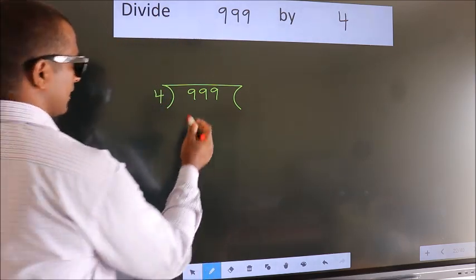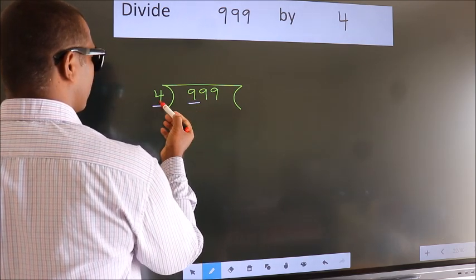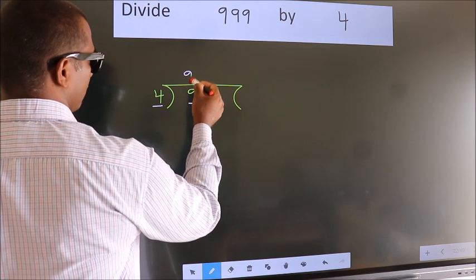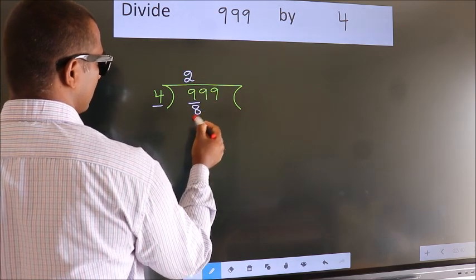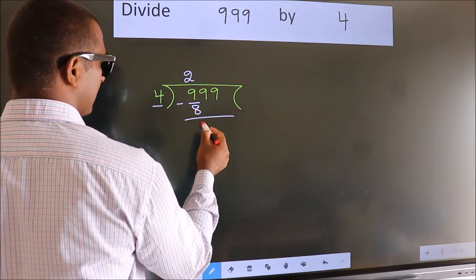Next, here we have 9, here 4. A number close to 9 in 4 table is 4 twos, 8. Now we should subtract. We get 1.